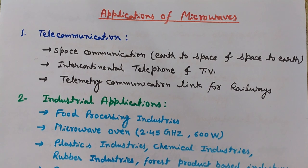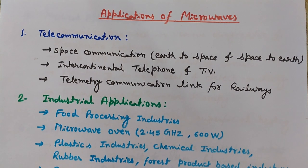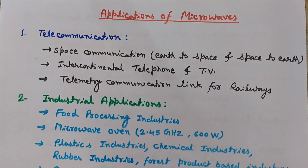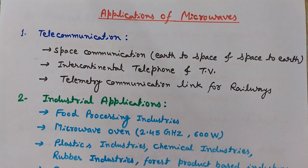Microwaves are electromagnetic waves having frequencies in the range from 1 gigahertz to 1000 gigahertz. This gigahertz stands for 10 to the power 9 hertz. To give you an idea, it is important to understand that the signals from an AM radio station are at 1 megahertz, and for an FM radio station it is 100 megahertz.